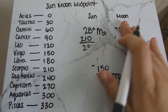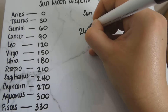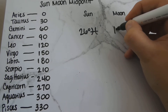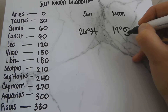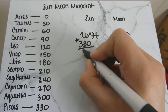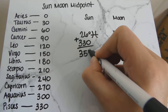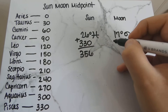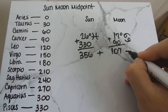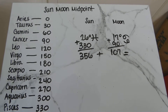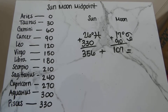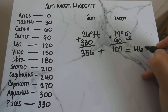Let me do another example for you. 26 degrees Pisces for the Sun and 17 degrees Cancer for the Moon. Pisces is over here at 330 — add those together and we get 356. Cancer is over here at 90 — add those together and you get 107. So add those two large numbers together and as you can see it's going to be a bit different from last time — I end up with 463.